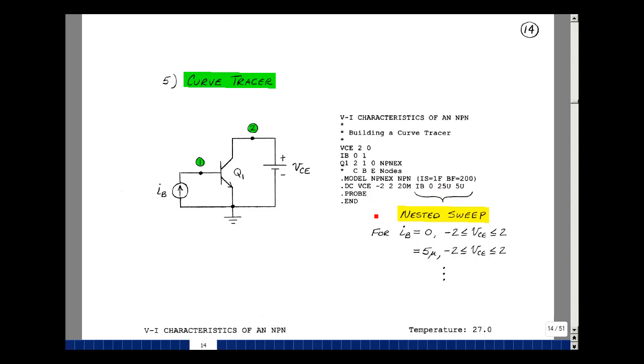For each value of base current, I want to sweep out the collector emitter voltage. We're going to use what's called a nested sweep. When I sub b is zero, we'll sweep these out, and we're going to increment this in five microamp steps. We'll start out with the first one being zero, then five microamps, then 10 microamps.